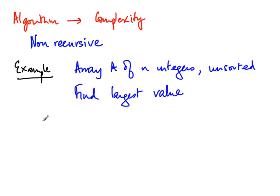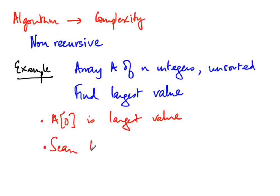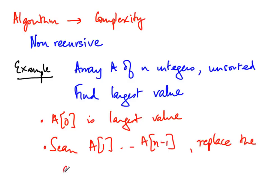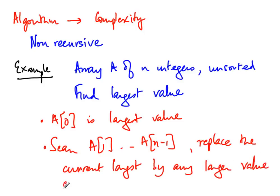What we do is assume that A[0] is the largest value, and then we scan the remaining elements A[1] to A[n-1], replacing the current maximum any time we see a larger value. So we start with A[0] as our assumed maximum and go through to the end, updating whenever we find something larger. Let us now look at a formal statement of this algorithm.